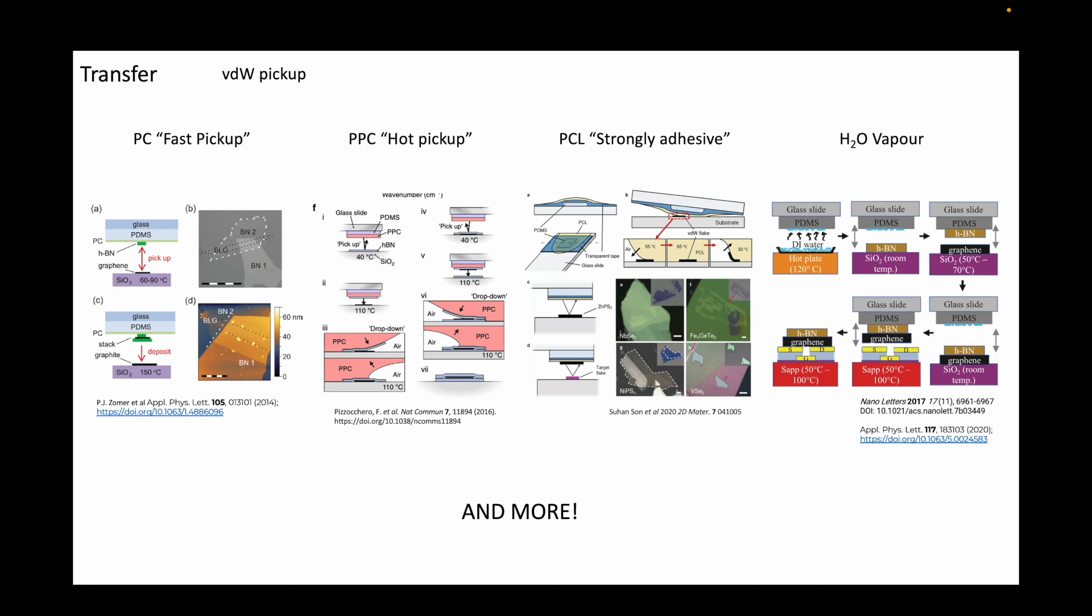The polymer films are brought into contact near the glass transition temperature, which allows them to be molded into the shape of the 2D flake, significantly increasing the van der Waals interaction between the polymer and the flake.